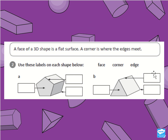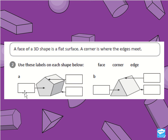Okay, the next question. A face of a 3D shape is a flat surface. A corner is where the edges meet — a corner or vertices. All you have to do is match these labels. Is this front part a face, a corner, or an edge? What about this line — is that a face, a corner, or an edge? What about this part — is that a face, vertices, or an edge? Then do the same thing with shape B.